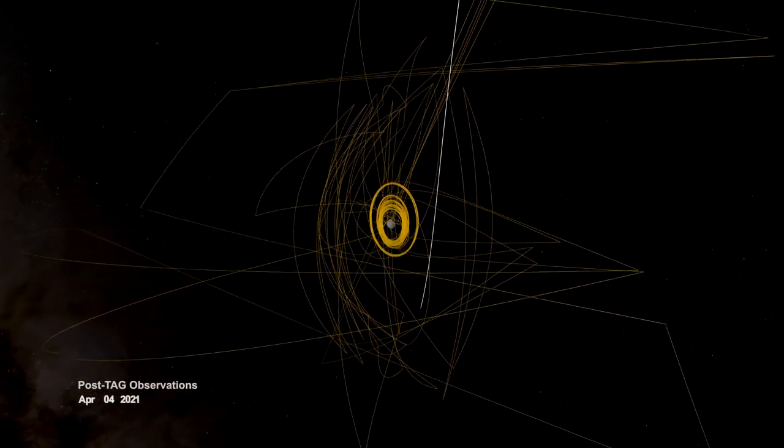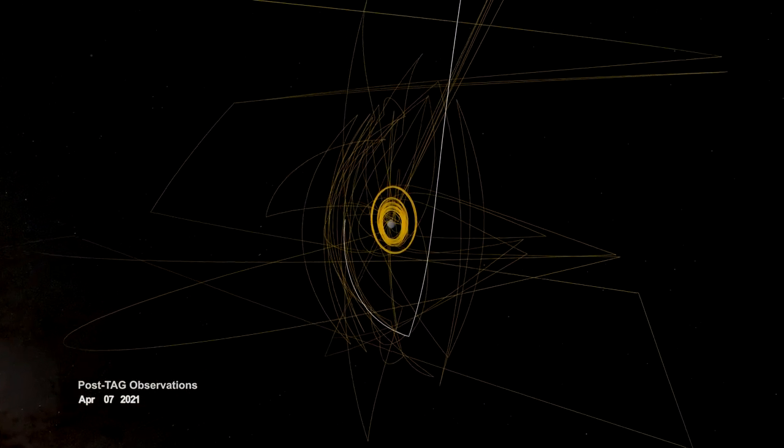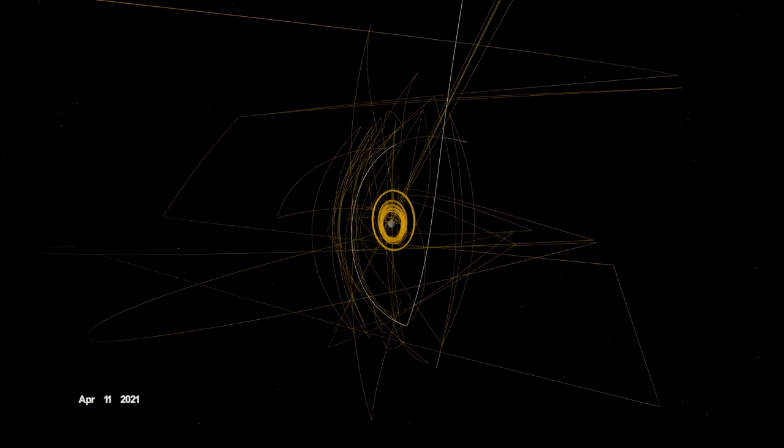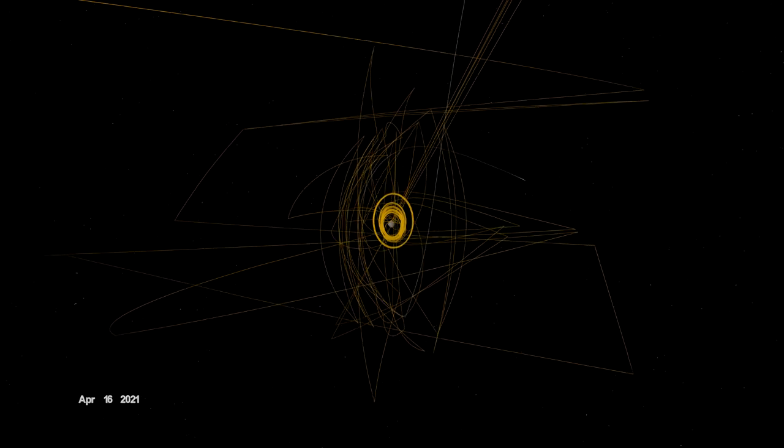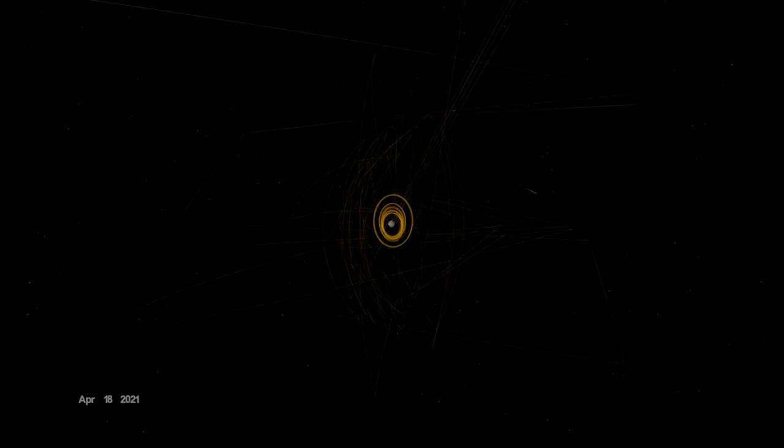Before departing Bennu, OSIRIS-REx was given one final task. On April 7th, it flew over Site Nightingale to observe how the sample collection event had changed the surface. And with that, OSIRIS-REx had recorded its mark on Bennu and spun the last strand of its web.